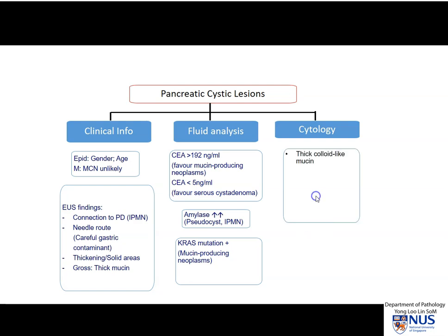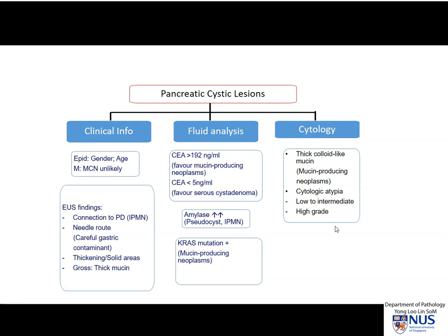In terms of cytology, we want to look for thick background colloid-like mucin, which is in contrast to thin gastric contaminant mucin. This again indicates a neoplastic mucin. And then of course, we want to assess the degree of cytologic atypia — whether it is low-grade or high-grade — because this would impact the management of these lesions.